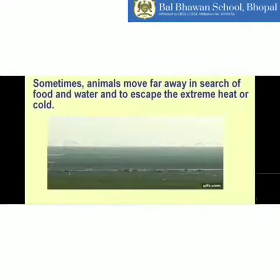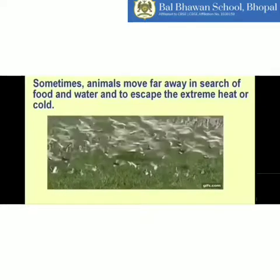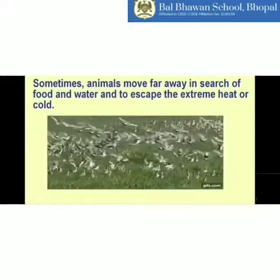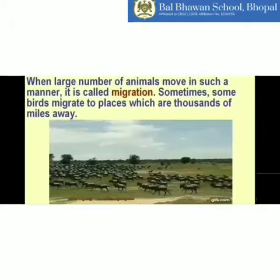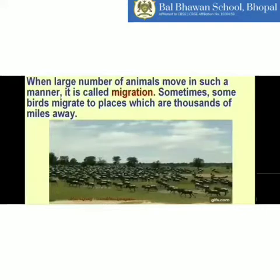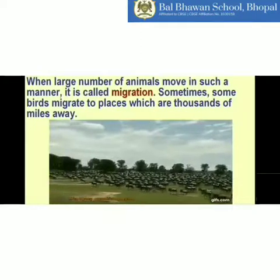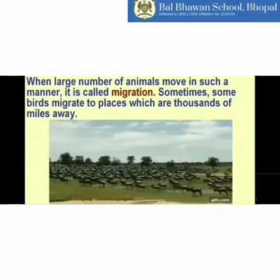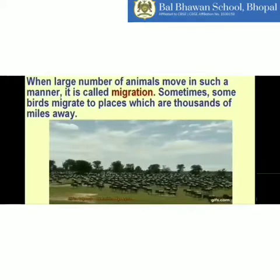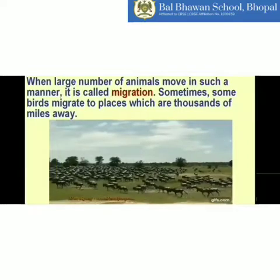Sometimes animals move far away in search of food and water, or to escape from extreme heat and cold. We call this migration — the mass movement of animals. In order to survive during very cold conditions, they move to warmer places, like Siberian cranes. When a large number of animals move in this manner, it is called migration. Some birds migrate thousands of miles away. You have to remember this word: migration.